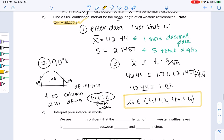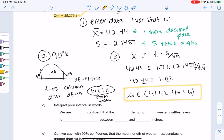So let's interpret it. We are 90% confident that the true mean, I guess you could just say one of the two words, means probably enough. Some students like the word average.